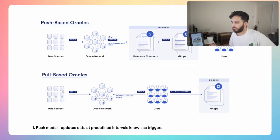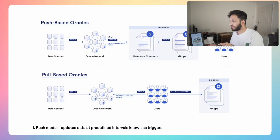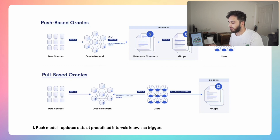Pull-based oracles are another type of oracle, and some oracle providers do have this mechanism. It works similarly — you've got the data source, which is fetched by the oracle network. However, there's a big difference: in push-based oracles, the oracle network delivers data directly on-chain. With pull-based oracles, it's the users who need to fetch this information when they need it, and then interact with applications that way. In the push model, the user doesn't have to do anything — the dApps do the work. The dApp also doesn't have to pay gas fees; the data is basically available on-chain already. Whereas with pull, the users and dApps do have to handle that.